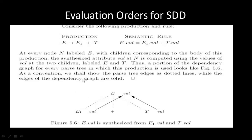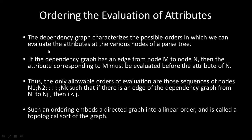The portion of the dependency graph for every parse tree in which this production is used is shown in the figure. The dotted line represents the parse tree and the solid line represents the dependency graph. The value for E1 and the value for T are computed first, then assigned to the value of E. The dependency graph characterizes the possible orders in which we can evaluate the attributes at the various nodes of the parse tree.